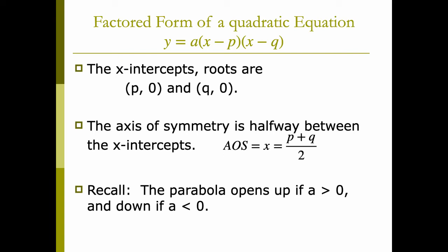The axis of symmetry is halfway between these intercepts — halfway between these solutions. To find the AOS, we just take p plus q and divide by 2. And recall that if a is greater than 0, the parabola opens up; if a is less than 0, it opens down. That applies here also.